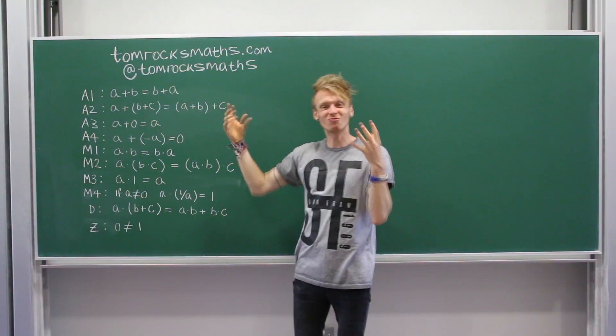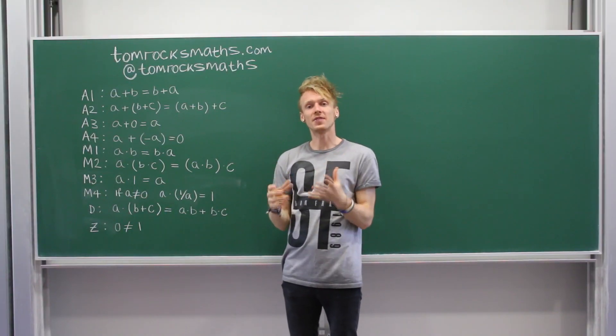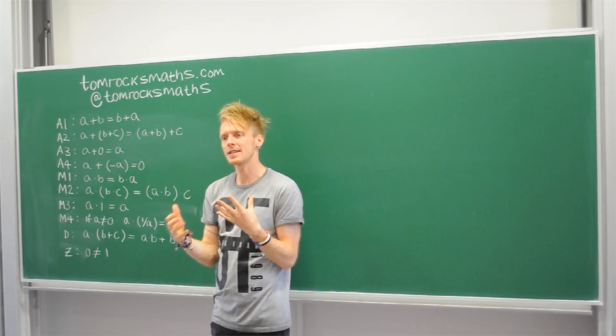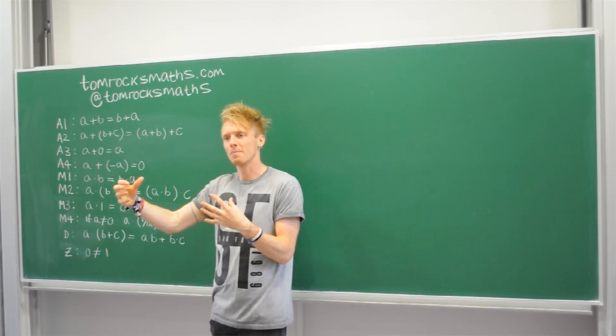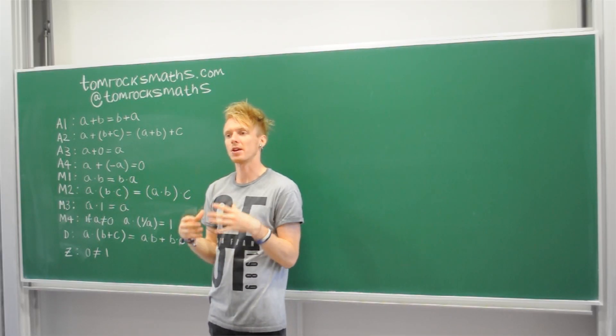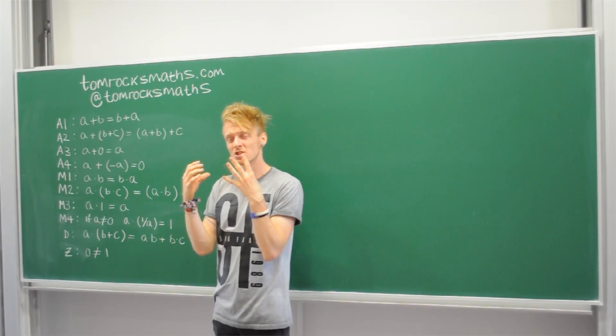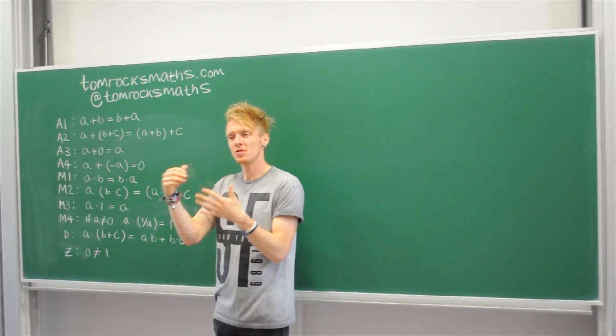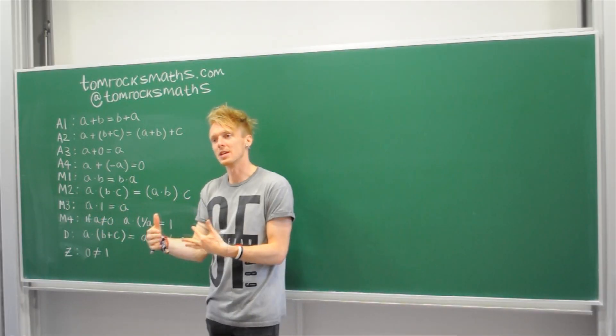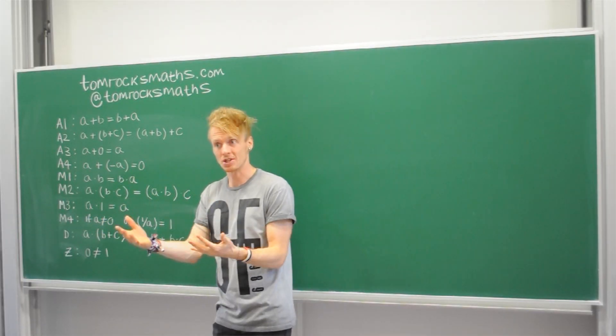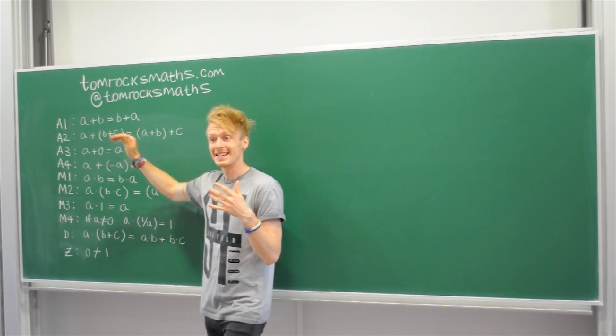A3, really important one, because this defines the identity. The identity is a concept in maths which means a number such that the original number isn't changed under that operation. So for adding, if you add zero to a number, you get the same number. So that makes zero the identity for addition. And this is what A3 is saying.